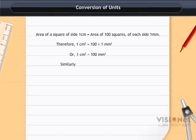Similarly, 1 m² = 1 m × 1 m = 100 cm × 100 cm, as 1 m = 100 cm, equals 10,000 cm².